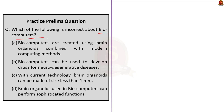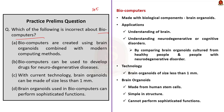Our next question is about biocomputers, which comes under science and technology. The question asks us to find the incorrect statement. The first option says biocomputers are created using brain organoids combined with modern computing methods — this is correct. Biocomputers are computers made with biological components. The research is carried out by a team at Johns Hopkins University. The researchers plan to combine brain organoids with modern computing methods to create biocomputers. Organoids are a simple version of an organ — three-dimensional cells made in the laboratory using stem cells.